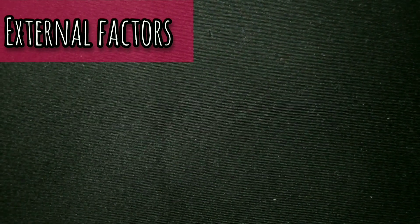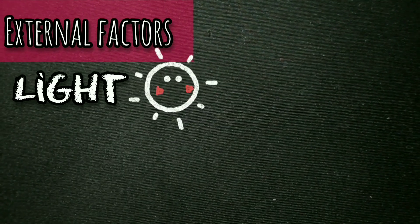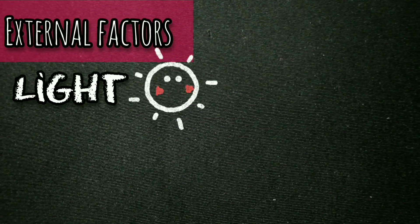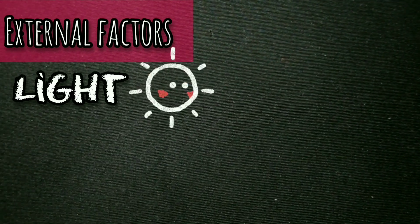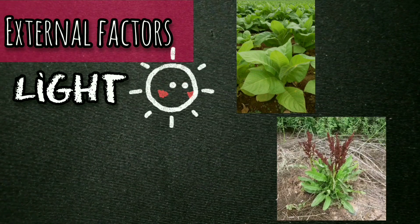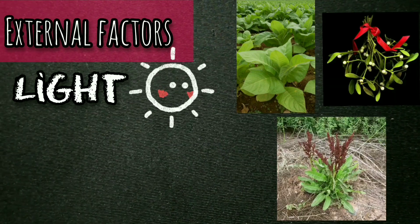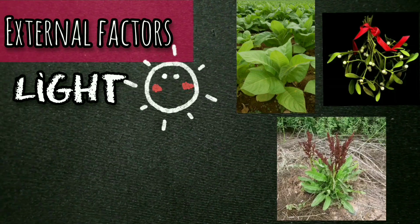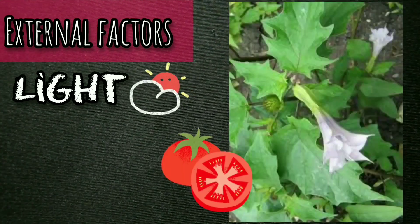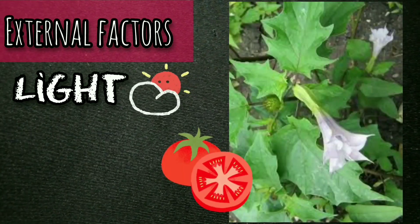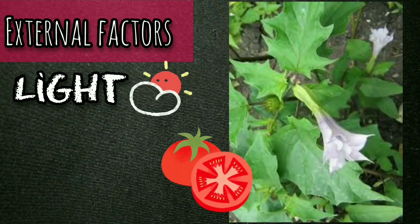In the case of light as an external factor, it has great importance in germination. Tobacco, Rumex, and mistletoe seeds do not germinate in darkness, while tomato or Datura seeds do not need light to germinate.